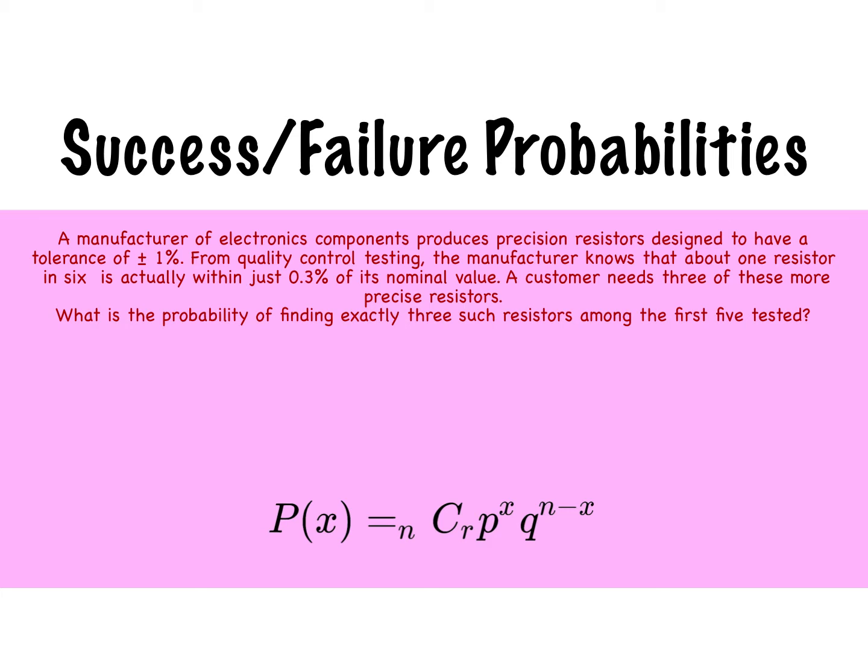In the first example, a manufacturer of electronics components produces precision resistors designed to have a tolerance of plus or minus 1%. From quality control testing, the manufacturer knows that about one resistor in six is actually within 0.3% of its nominal value.